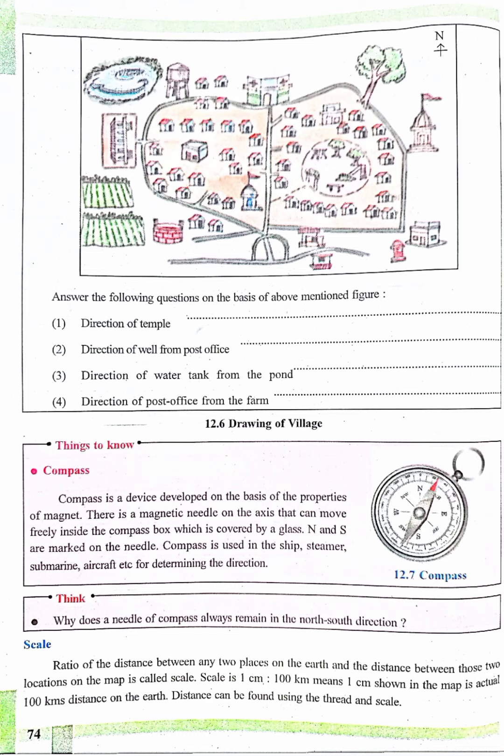This means 1 cm shown in the map is actual 100 km distance on the earth. Distance can be found using the thread and scale. Students, a scale is the ratio between the distance between two points on map and the actual distance between the same two points on the surface of the earth.